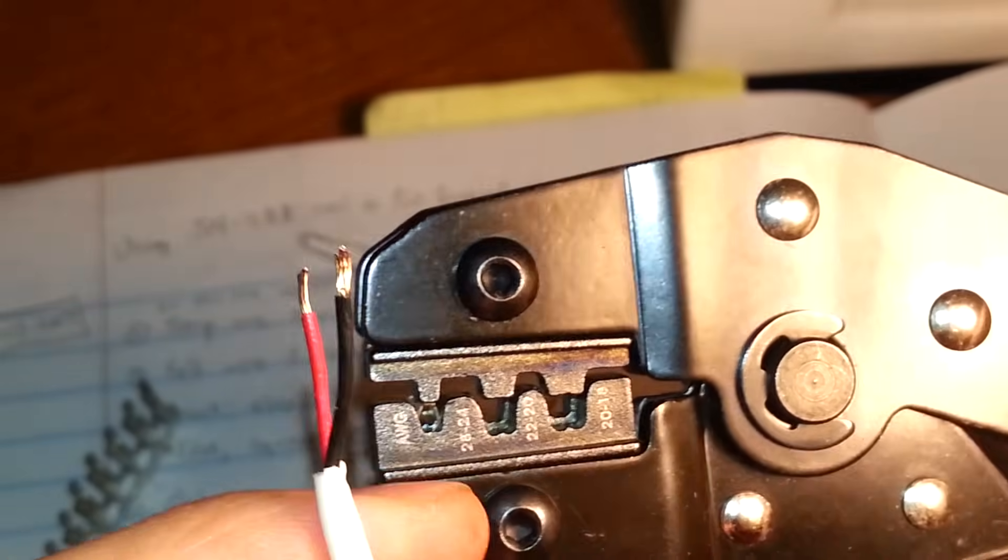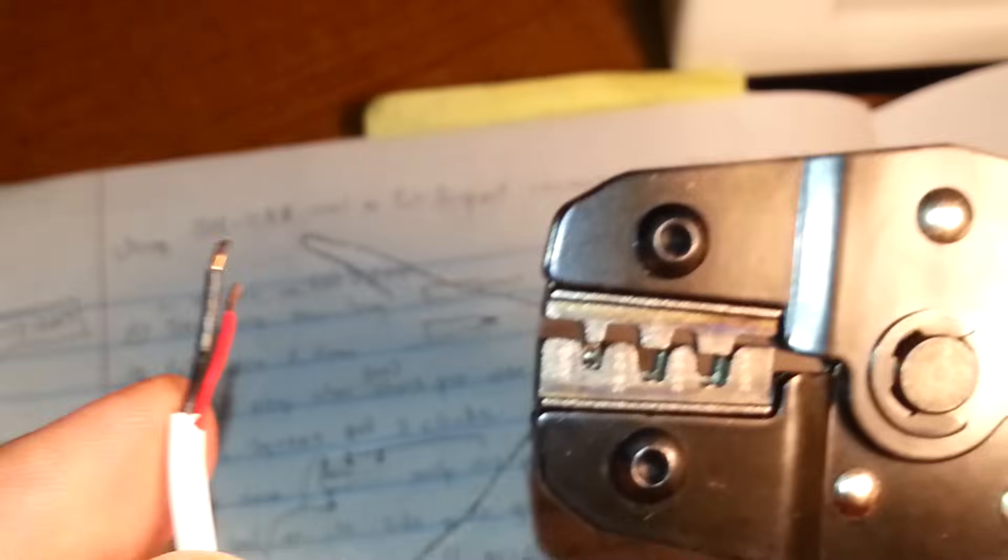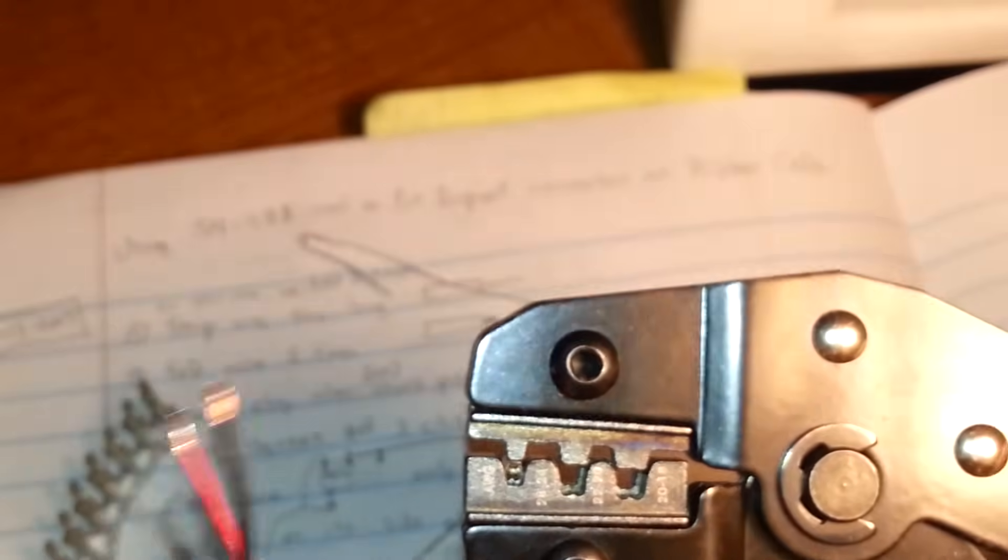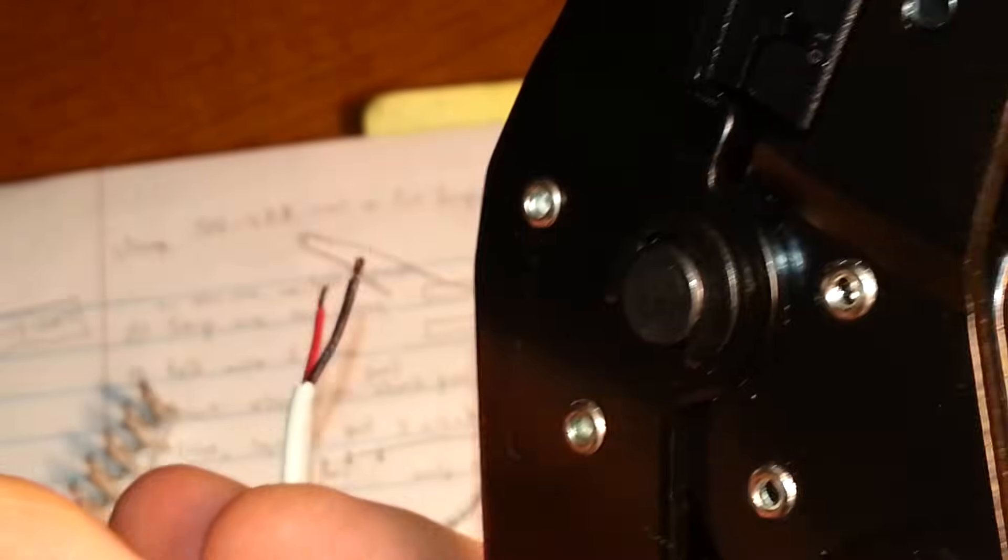I was using very small wire from those ribbon cables from printers. Folding over the wire two times to make it thick enough. And, man, that didn't work. But this is, let me see, this is doorbell wire. And this stuff works great. 22 AWG wire.